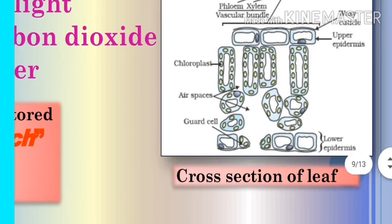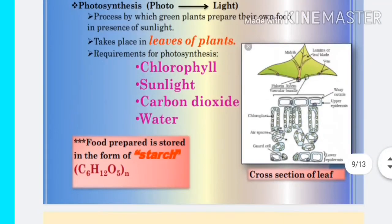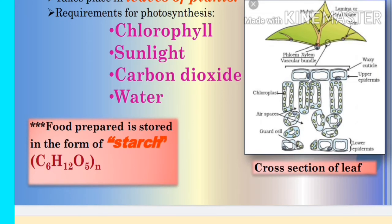You can see that food prepared is stored in the form of starch. This formula is (C6H12O5)n, with n in brackets.